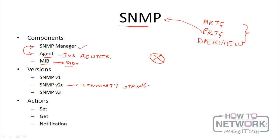There are two kinds of community strings: the read-only community string and the read-write community string. With a read-only community string, the SNMP manager can only perform a get action — it can only read what's there and cannot change anything. But with read-write, the SNMP manager can actually change the values of the OIDs, effectively configuring the devices. That's what's called the set action. So with read-write, you can get stuff and you can write stuff — you can change and read the values of the OIDs.